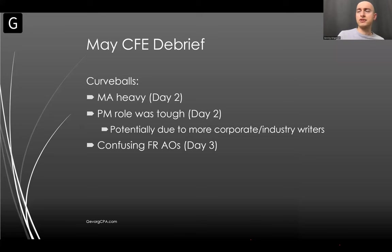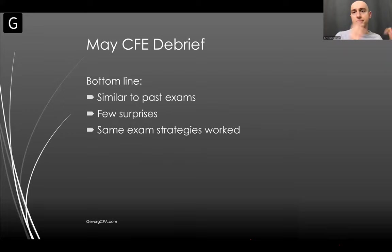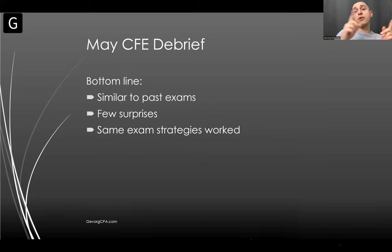Another curveball on the May 2022 CFE was that the AOs for FR were quite confusing. There weren't that many AOs, but the ones that came up were not very clear — a little tricky to understand what exactly they wanted you to do. For example, they gave a PPE question and you weren't sure how to analyze it: is this a measurement issue, a classification issue, componentization? For September, my thought is it's going to shift back towards FR.